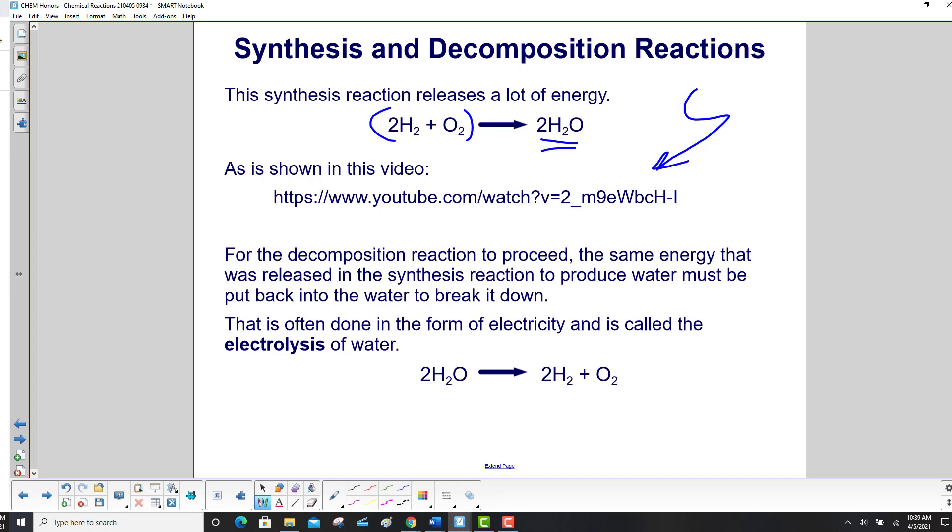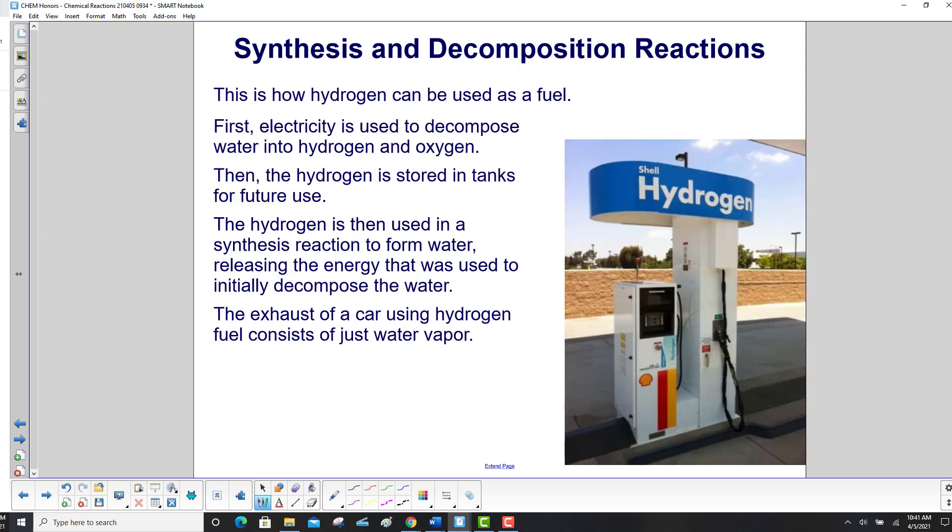This is often done in the form of electricity, and it is called the electrolysis of water. This is how hydrogen can be used as a fuel. First, electricity is used to decompose water into hydrogen and oxygen. The hydrogen is then stored in tanks for future use. The hydrogen is then used in a synthesis reaction to form water, releasing the energy that was used to initially decompose the water. The exhaust of a car using hydrogen fuel consists of just water vapor.